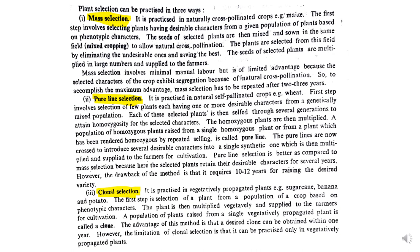The third kind is clonal selection, practiced in vegetatively propagated plants. It involves selecting a plant from a population of crops based on phenotypic characters, then multiplying it vegetatively and supplying it to farmers. A population of plants raised from a single vegetatively propagated plant is called a clone.